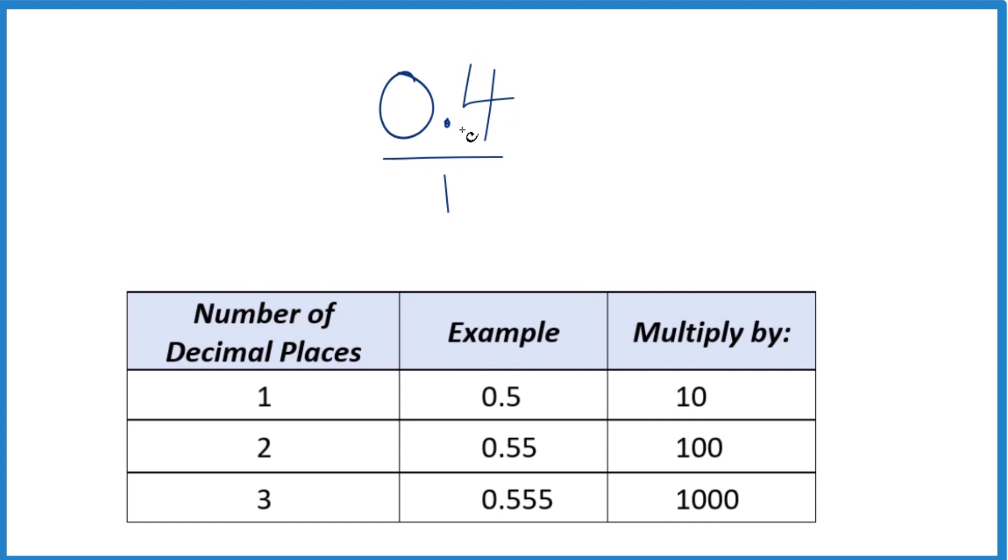We'd like to get rid of the decimal here in the numerator, make it a whole number. What we could do is multiply it by 10. Because 10 times 0.4, or 0.40, that ends up equaling just 4. So there's our whole number.